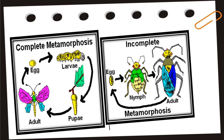Next, we have the incomplete metamorphosis, where egg, nymph, and adult are present in the life cycle of the cockroach. There are only three stages.